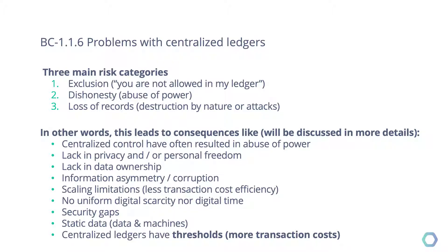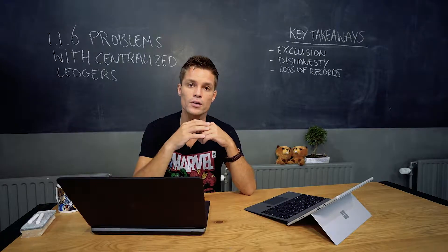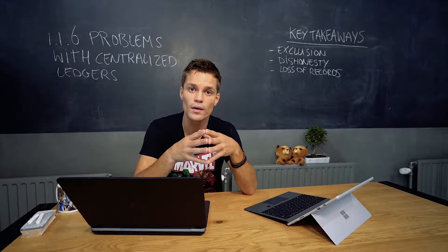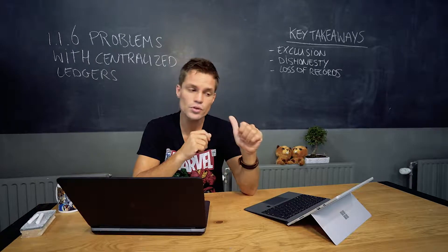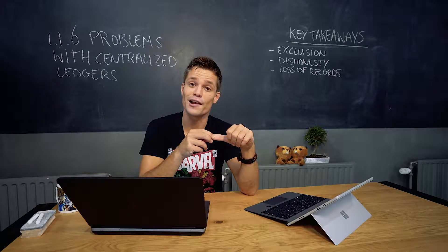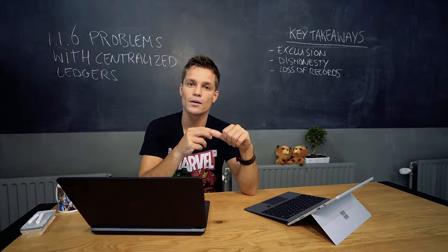Exclusion, for example, is that you as a trusted third party can say, 'You are not allowed in my ledger.' In a bank system, for example, this could mean disabling somebody with an Iranian passport. But also, because you are the owner of the ledger, you own all the data — you are building a wall around your data. Other people can't access all the data that you can access, which gives you a huge advantage, because data nowadays is worth a lot of value. Exclusion means you are not allowed to interact with the ledger except with limitations determined by the trusted third party.